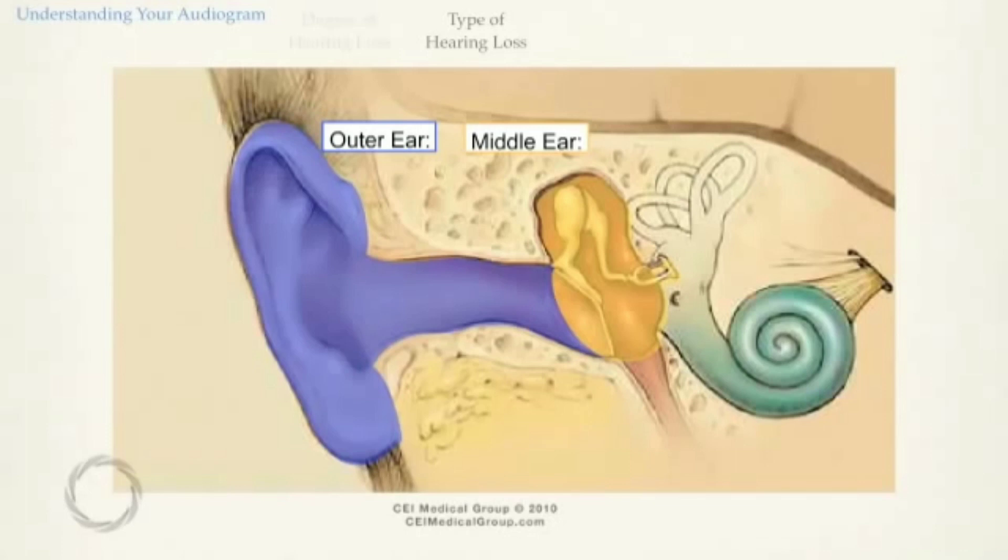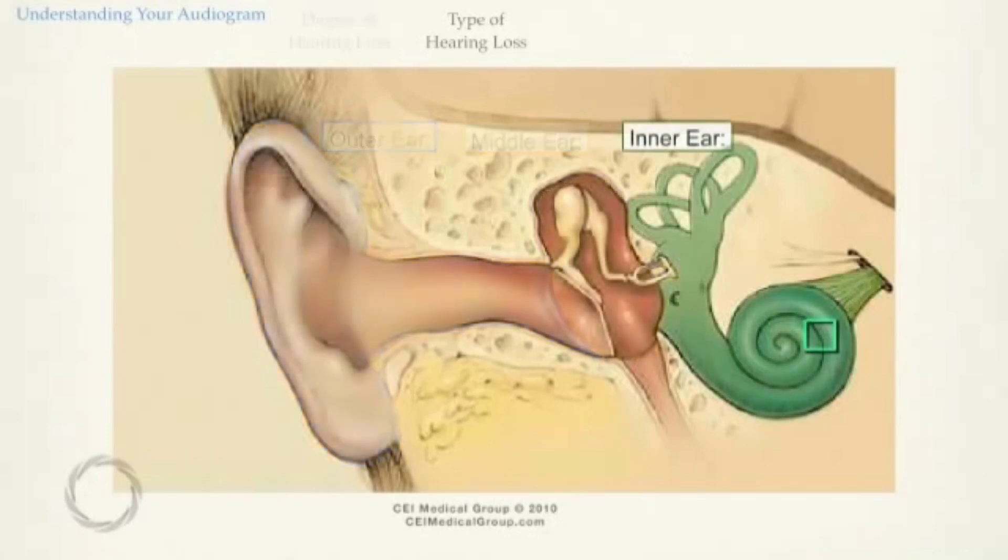These bones transmit sound to the inner ear, where the hearing organ, or cochlea, is located. Tiny hair cells in the cochlea bend in response to sound, transmitting the signal to the auditory nerve, which carries the sound to be received and translated by the brain.